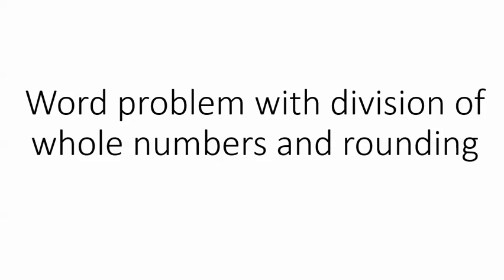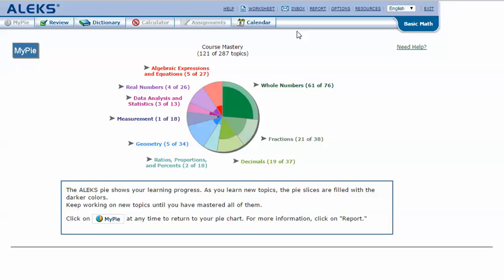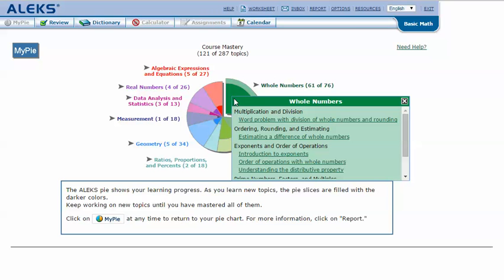Word problem with division of whole numbers and rounding. In your ALEKS pie, mouse over the dark green slice whole numbers to reveal the drop-down list of topics you need to cover. Click on word problem with division of whole numbers and rounding.